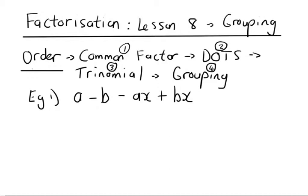With groupings, you'll generally find that you have four terms — it could be more, but generally there are four. Groupings always leads to another type of factorization, and normally it leads to common factor again.